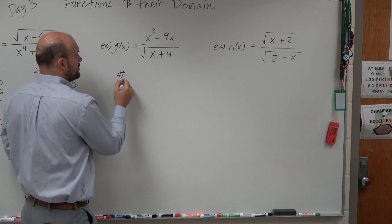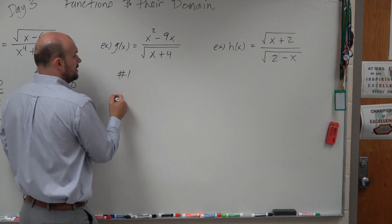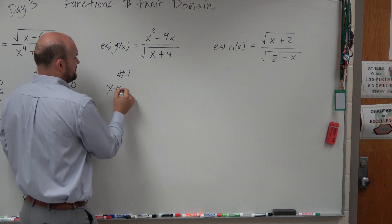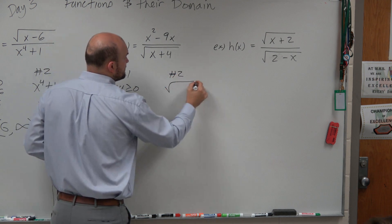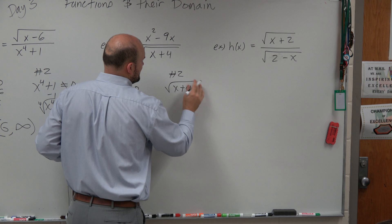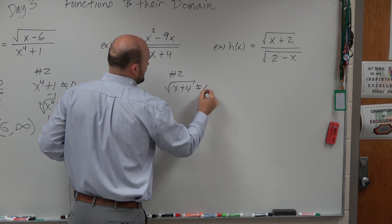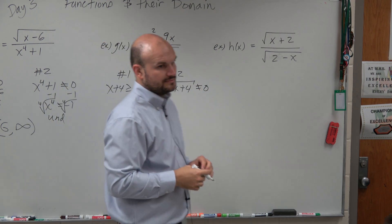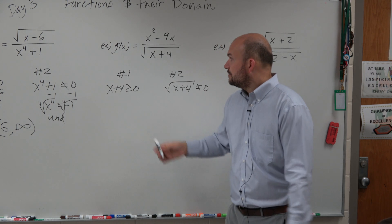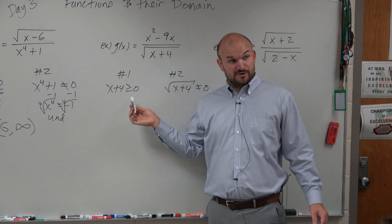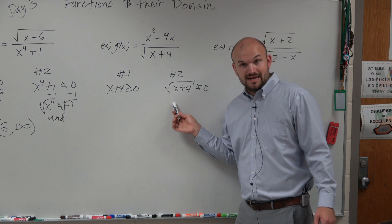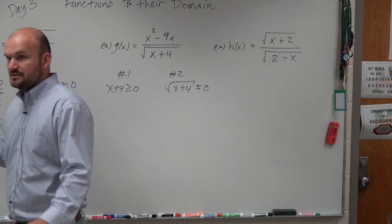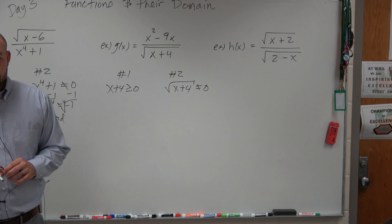So my two restrictions: restriction number one is going to be what's under the radical. So x plus 4 has to be greater than or equal to 0. And restriction number two is whatever's in the denominator cannot equal 0. Whatever's under the radical has to be greater than or equal to 0 for any given x. Whatever's in the denominator cannot equal 0 for any given x. Good.